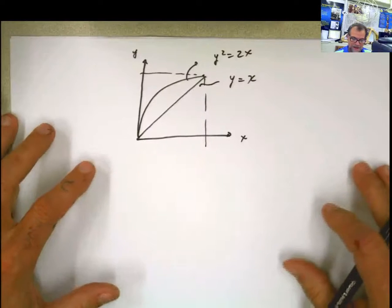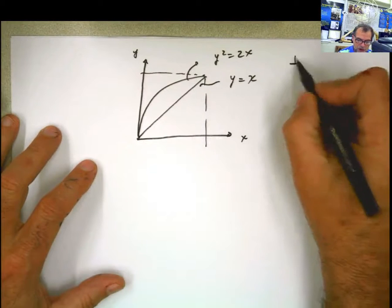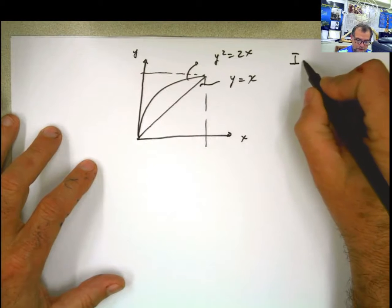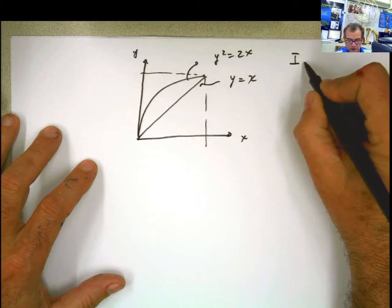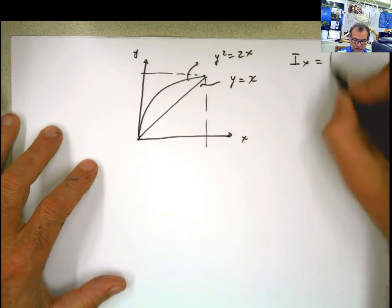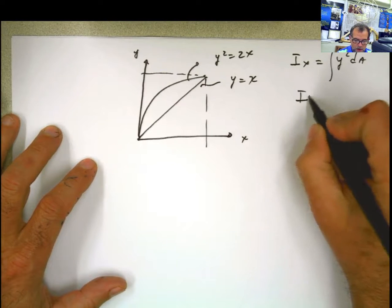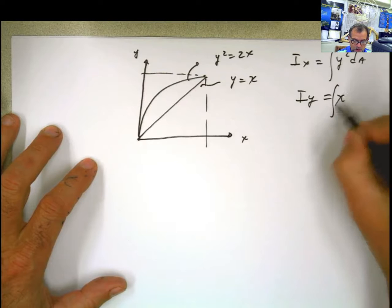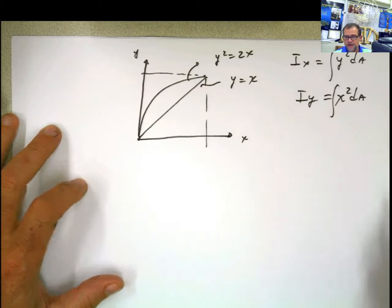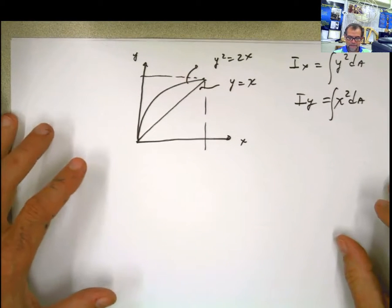OK, here we are again. This is a continuation, a sequel if you want, of the previous problem. In the previous problem, we calculated I_x equal to the integral of y squared dA. Now, we are going to calculate I_y, saying that it's equal to the integral of x squared dA. So this is a sequel.